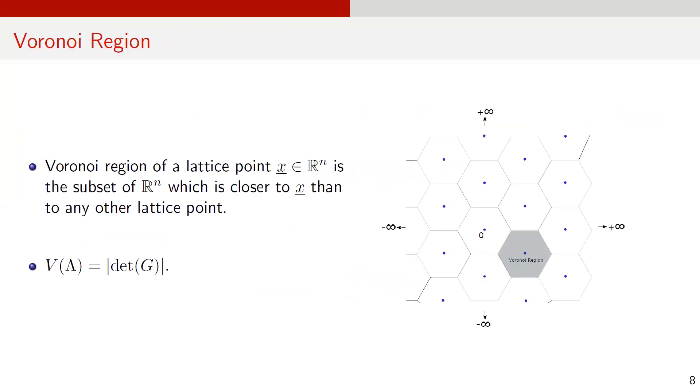Voronoi region or cell is the fundamental region of a lattice. The Voronoi region of a lattice point X in R sub n is the subset of R sub n which is closer to X than any other lattice points. Voronoi region is represented by Greek letter nu. For any lattice, the Voronoi region of all lattice points are congruent and have same volume. The volume of Voronoi region is generally denoted by V and it is equal to the determinant of the generator matrix G. The volume of Voronoi region is also a measure of constellation density of a lattice. The Voronoi region of a lattice is shown here in the figure.